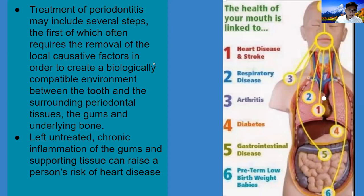The treatment of periodontitis, a gum disease, is involved in several steps. The first step is to remove the local causative factor in order to create a biologically compatible environment between the tooth and surrounding gum tissue. Left untreated, chronic inflammation of gums and supporting tissue may raise the person's risk of heart disease. The American Dental Association as well as the American Heart Association both recognize a correlation between oral care and heart condition.